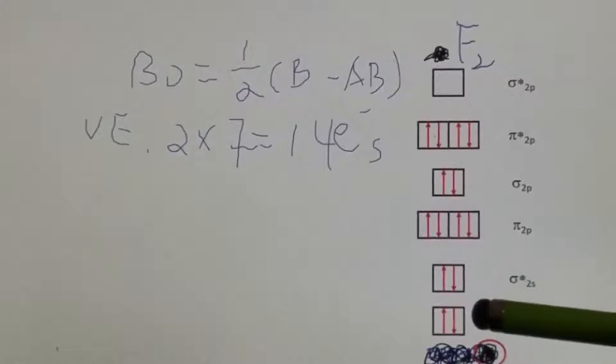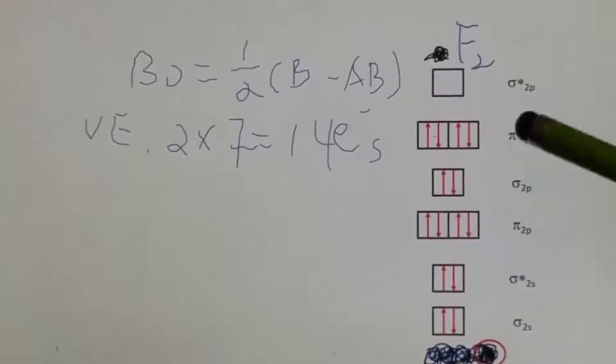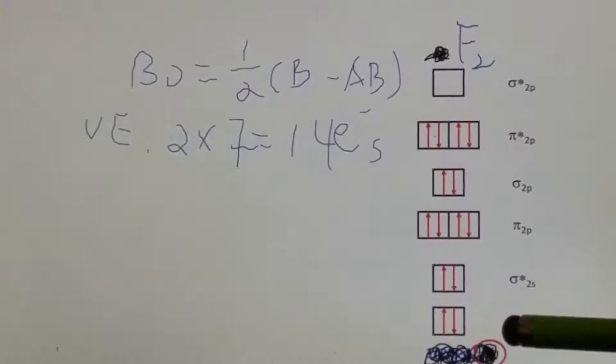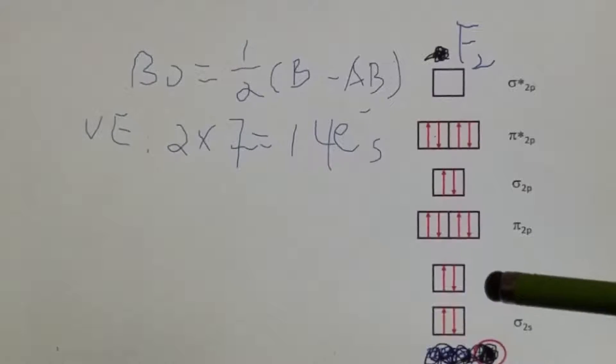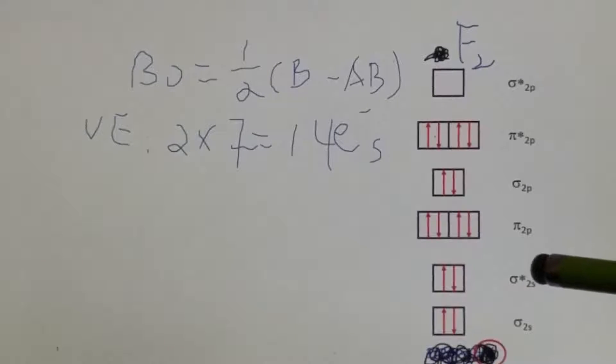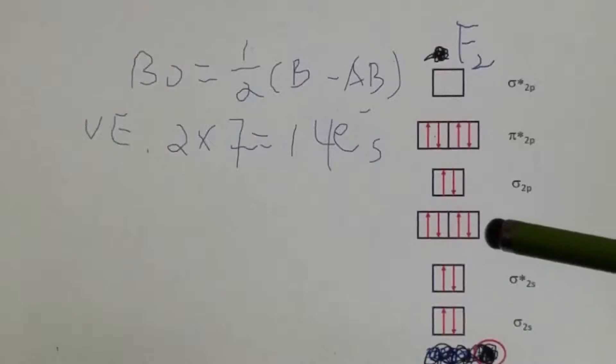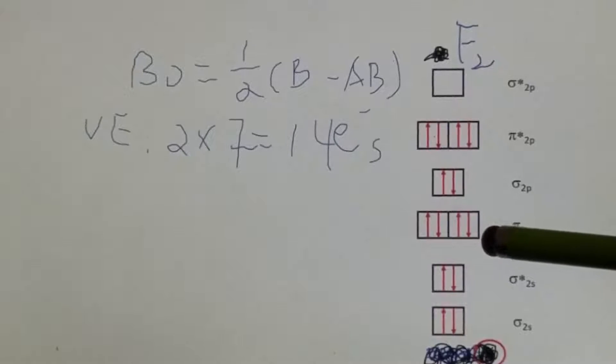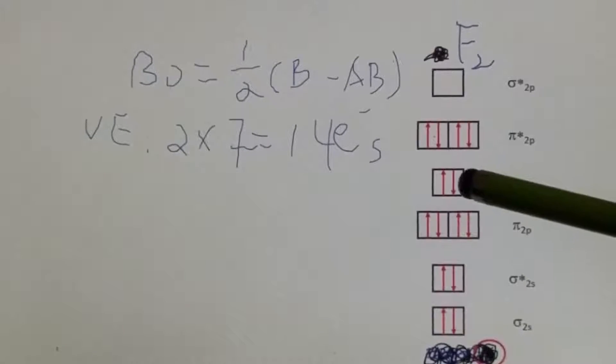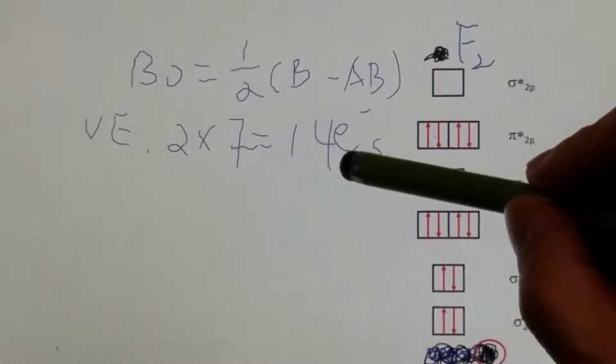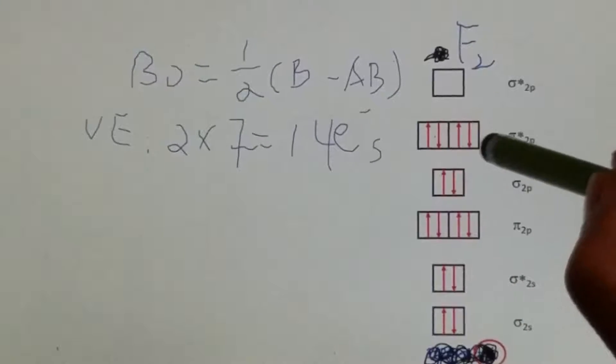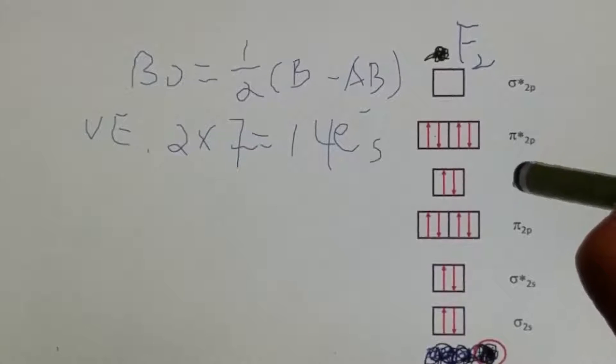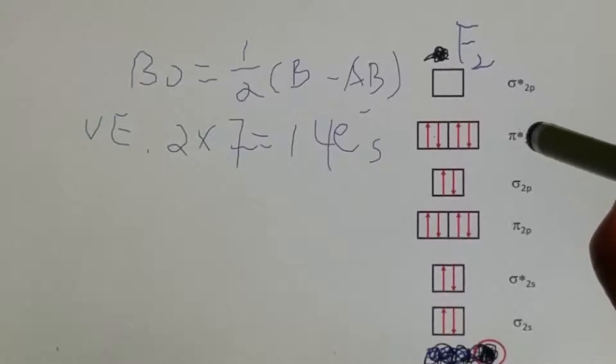As we can see, it will start filling the lowest energy levels. In this diagram: sigma 2s, sigma star 2s, pi 2p, sigma 2p. So far that's 2 plus 4, that's 6, plus another 4, that's already 10, and then there's still 4 electrons left, that's why they will fill this pi 2p star, the anti-bonding orbital.